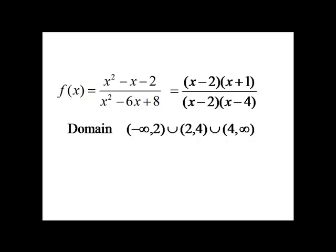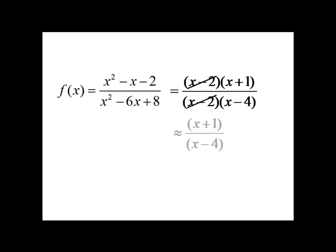Now, another interesting thing about this function, the (x - 2)s can be canceled, because we have products on top and bottom. So this simplifies down to (x + 1) over (x - 4).